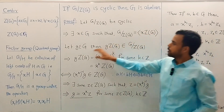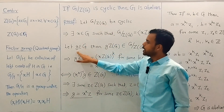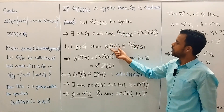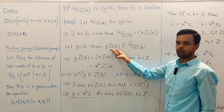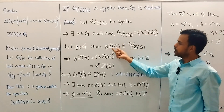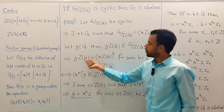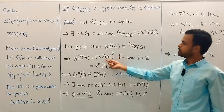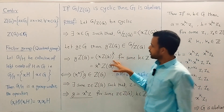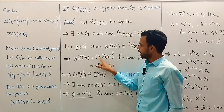Say this whole group is generated by a particular left coset. So there must be some x in G such that the whole group equals the subgroup generated by that left coset. Now let g be any arbitrary element of group G. Then the left coset of Z(G) containing g must belong to this quotient group. Since the quotient group is cyclic and generated by this left coset, this coset must be some power of the generator — say the k-th power for some k in the integers. So this left coset equals x to the power k, which by properties of cosets is the left coset of Z(G) in G containing x^k.